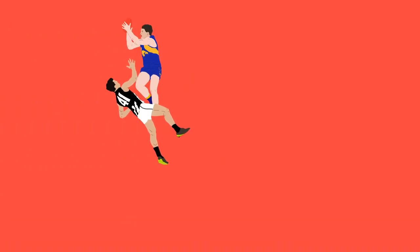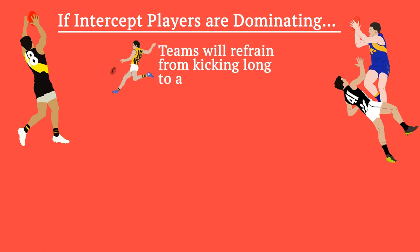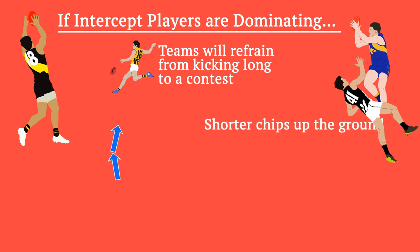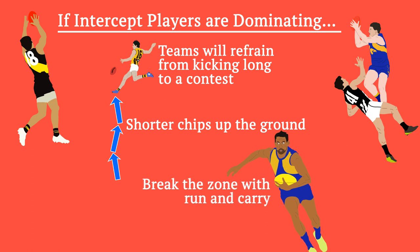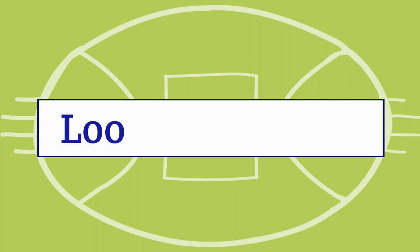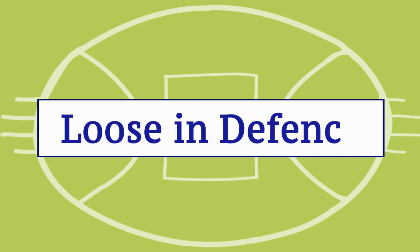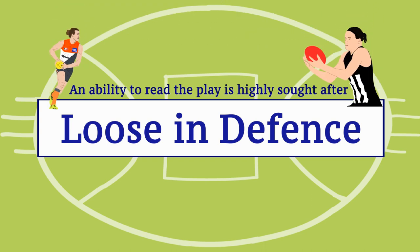When intercept players are dominating the backline, it can in turn dictate how the opposition plays further afield. Teams will refrain from kicking long to the contest where they're outnumbered, and instead may opt for shorter chips up the ground, or to break the zone with run and carry. When used correctly, the loose man can be the difference between the two sides, and is a key reason why a natural ability to read the play is such a highly sought after aspect of any defender's game.